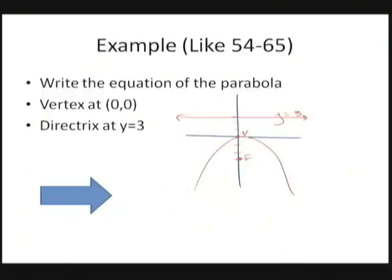Now if the directrix was 3 units up and the focus is 3 units down, that means that this distance right here, which is p, is going to be negative 3 units. Because that's in a negative direction. So that means I'll use my basic equation for a vertically oriented parabola, which is x squared is equal to 4p times y. Or in other words, x squared is equal to, when I substitute in p, 4 times negative 3 is negative 12y.